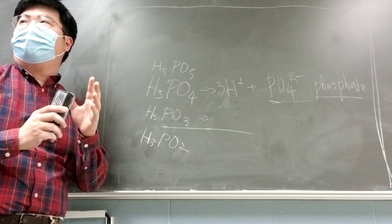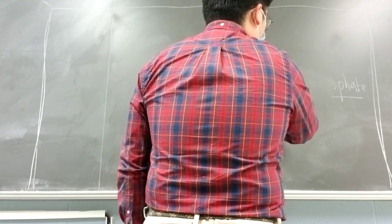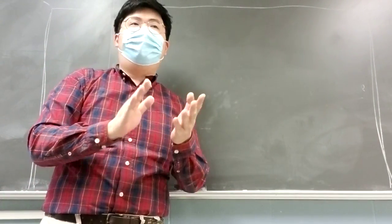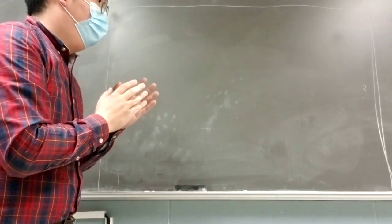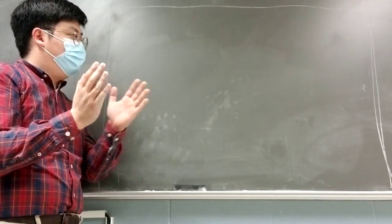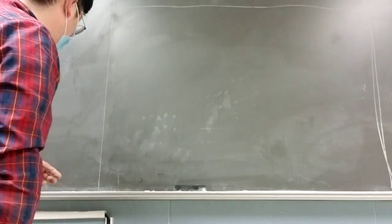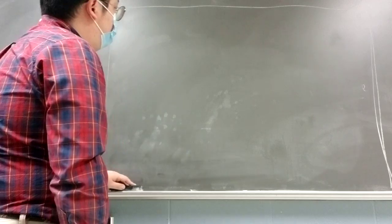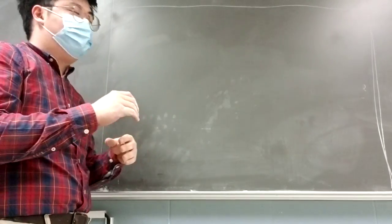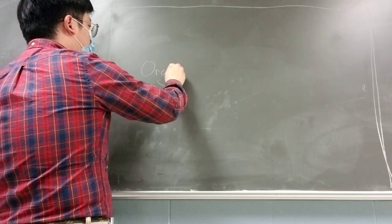That's it for the nomenclature of ionic compounds, molecular compounds, and binary and oxyacids. I promise before the exam I will have a number of review sessions and give you more practice problems. This covers what chapter 2 covers on nomenclature. The later part of chapter 2 is about organic compounds.